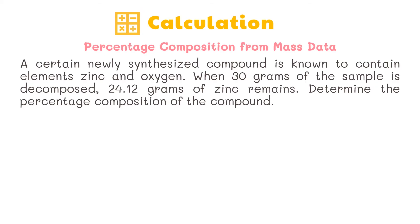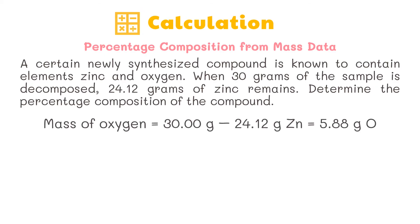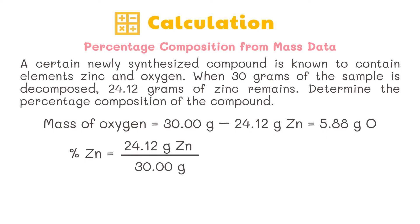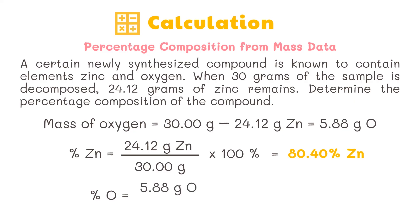Step two: calculate. Here's a hint — subtract to find the mass of oxygen in the compound, then divide each element's mass by the total mass of the compound to find the percentage by mass. Mass of oxygen equals 30 grams minus 24.12 grams of zinc, which equals 5.88 grams of oxygen. Now we have both masses. Percentage of zinc equals 24.12 grams over 30 grams times 100 percent, equals 80.40 percent zinc. Percentage of oxygen equals 5.88 grams over 30 grams times 100, equals 19.60 percent oxygen.